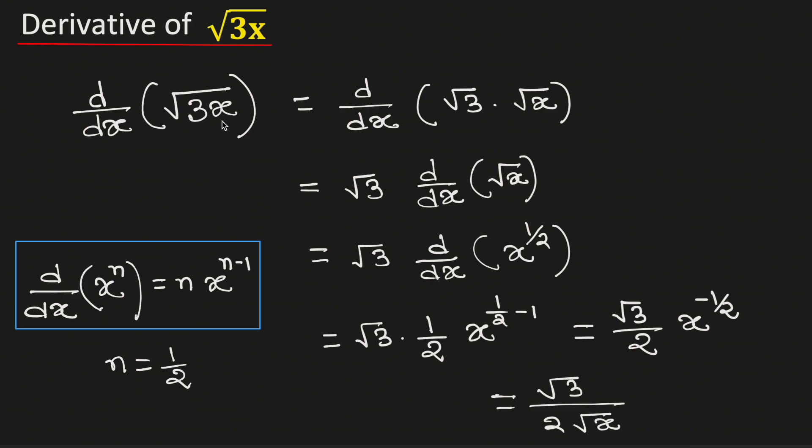Therefore the derivative of root 3x is equal to root 3 divided by 2 root x and this is our final answer.